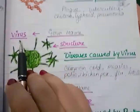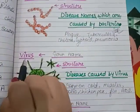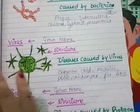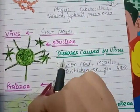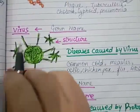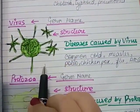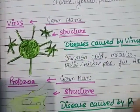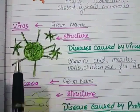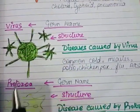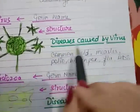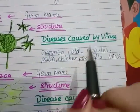The next microorganism is virus. The germ name is virus. As you know the coronavirus — COVID-19 — is also a virus. You have all seen the structure of the coronavirus on television. This is not a coronavirus but a simple virus. This is the structure of a virus.